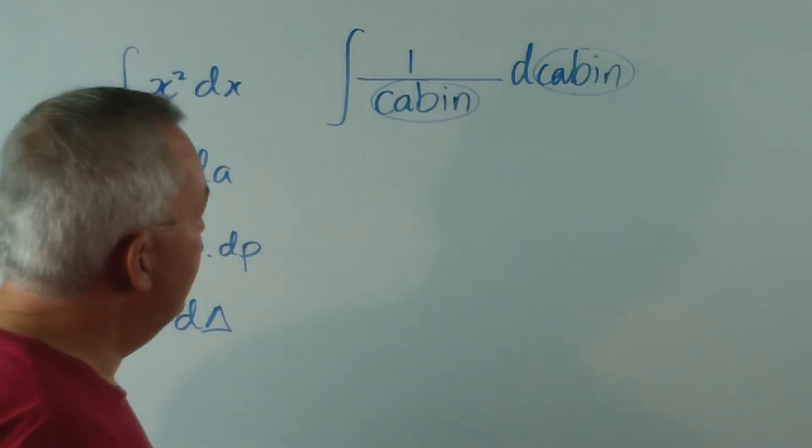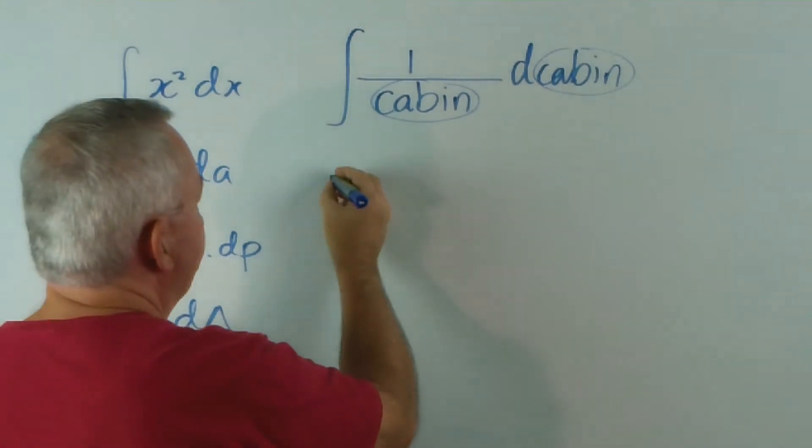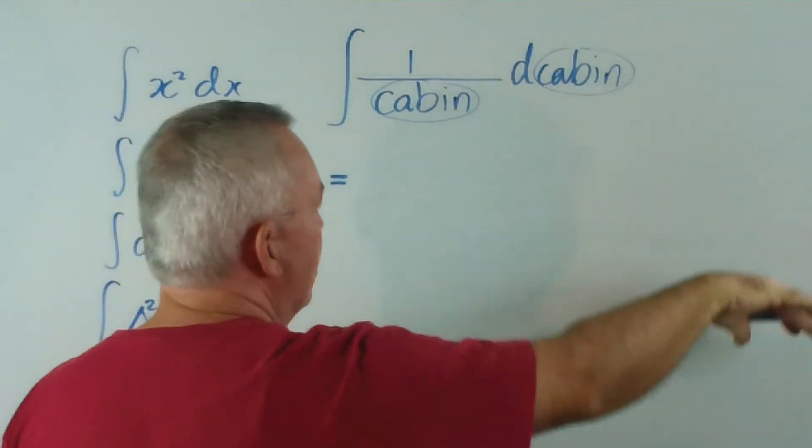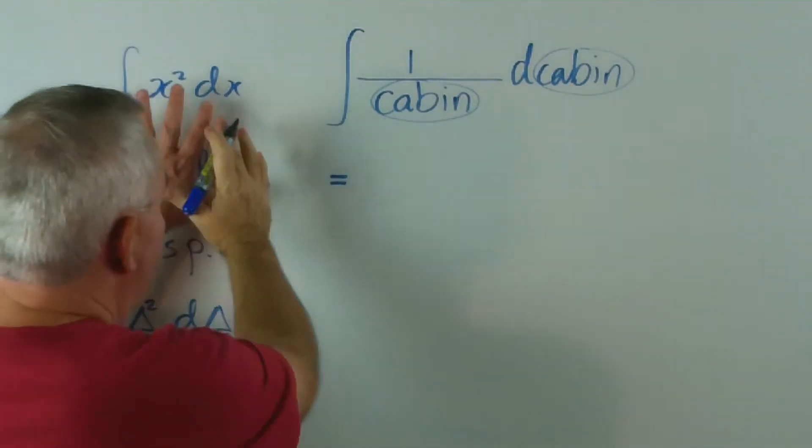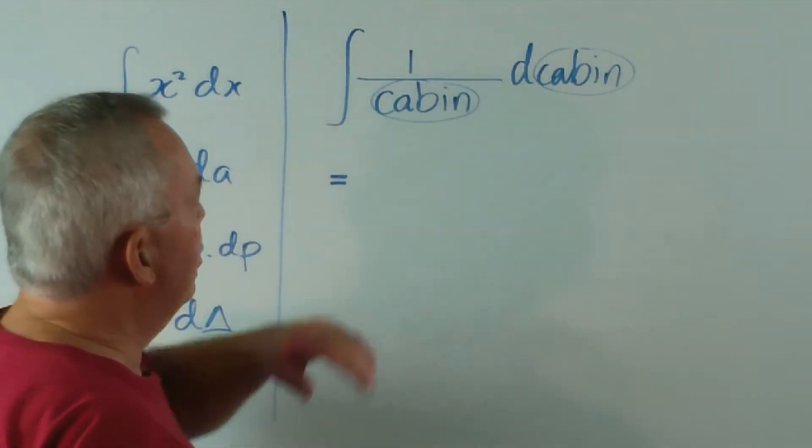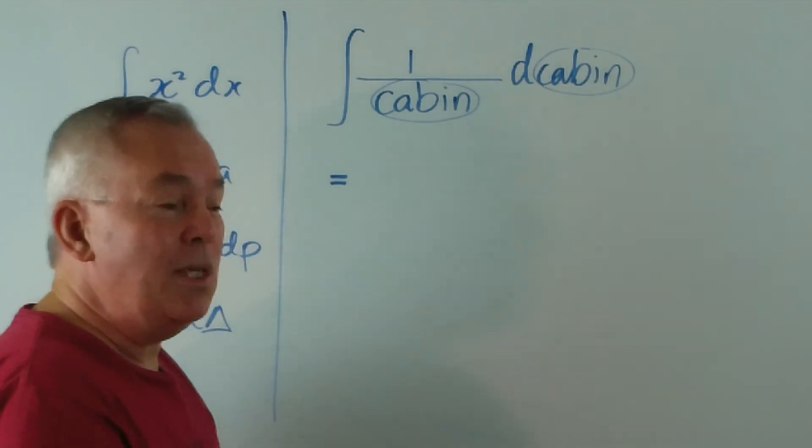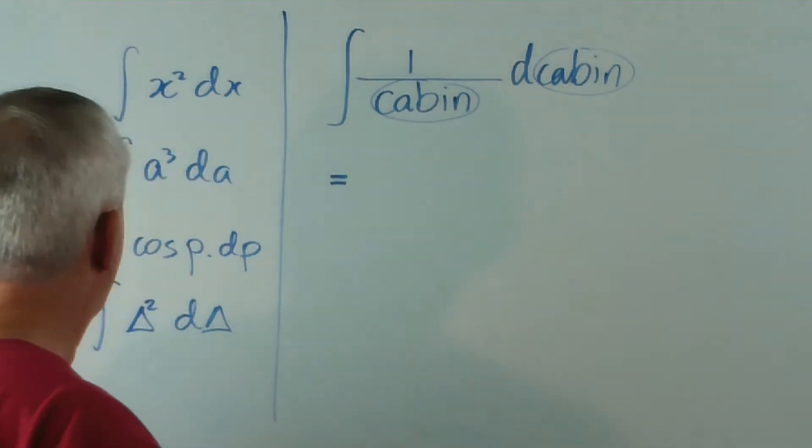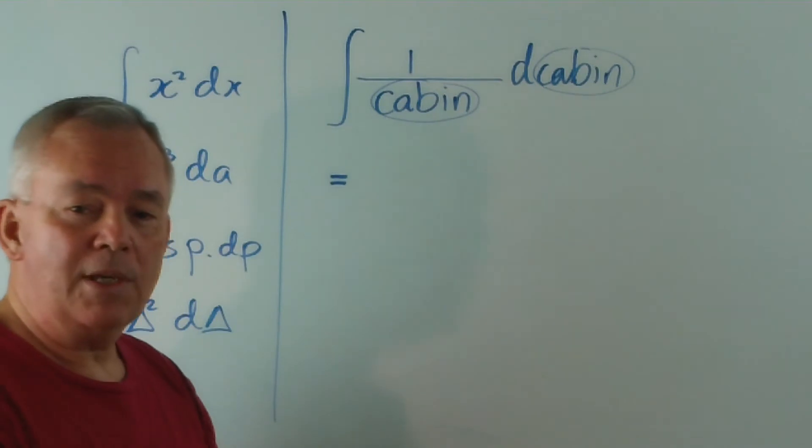Well, what on earth is that? I haven't given myself room on the side of the board because I used this up. So, what is the integral of 1 over cabin D cabin? Well, what's the integral of 1 over X dx? What is the integral of 1 over X dx?